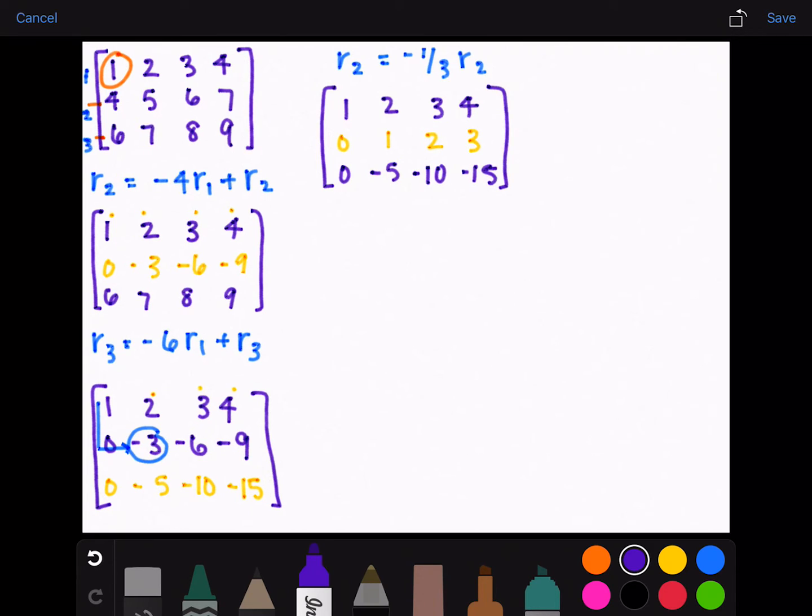And now we need to make this a zero because it's underneath our last pivot point, which was this one. Well, we will do the pivot points in this orange. That negative three is a pivot and that one is a pivot.